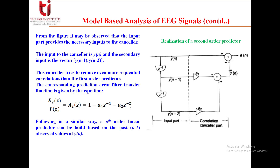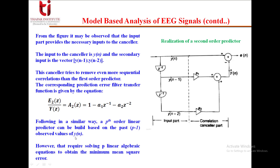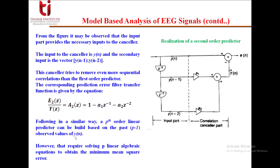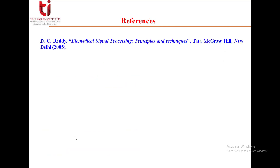Following a similar way, we can design a p-th order linear predictor built on the past p-1 observed values of y(n). However, that requires solving p linear algebraic equations to obtain the minimum mean square error, which is very difficult. To improve upon this, we will move to another model described by linear prediction theory — that is the autoregressive model — which we will take up in the next lecture. For these topics, you can refer to the book by D.C. Reddy: Biomedical Signal Processing: Principles and Techniques.